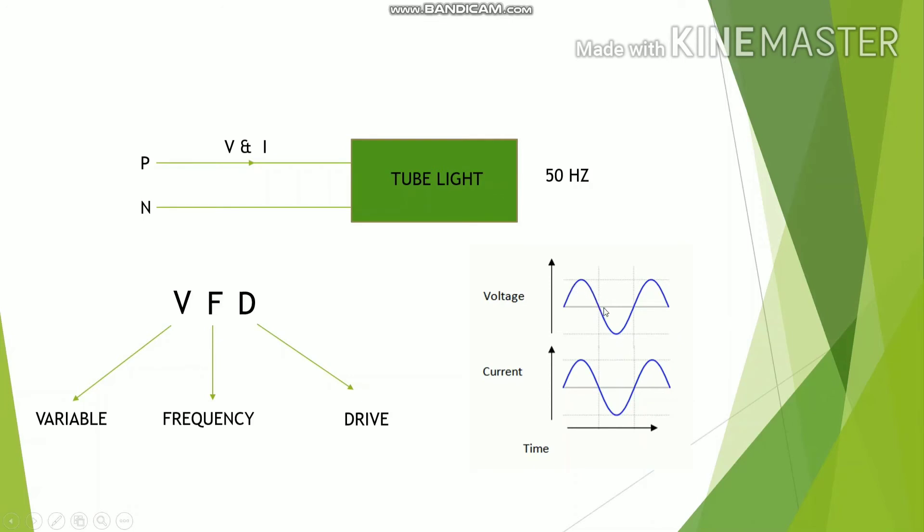The half waveform, as I am showing, indicates that the tube light is turned on, and the other half is showing the tube light is turned off. And that's how the cycle of both current and voltage goes further 50 times in a second.